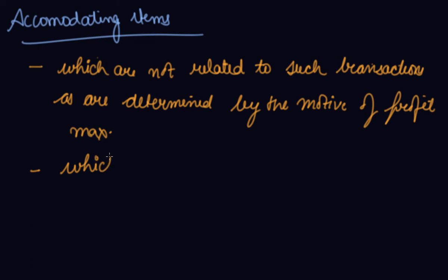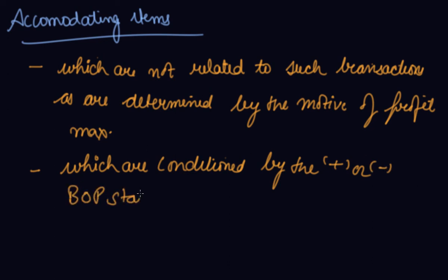Second, which are conditioned by the positive or negative balance of payment status of the country. So if you have surplus, you will give loan to the rest of the world. If you have deficit, you will borrow the loan from the rest of the world. So borrowing or giving loan depends upon your plus and minus BOP status. So these are the conditioned items that you take after the result of the balance of payment.